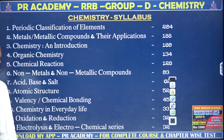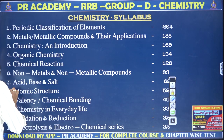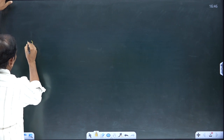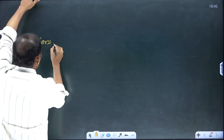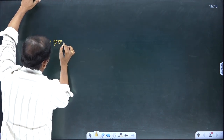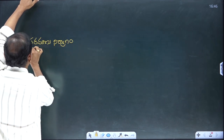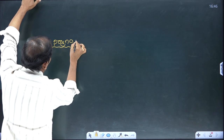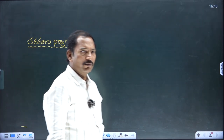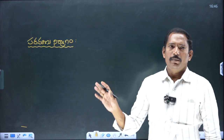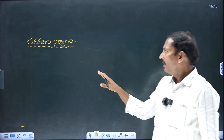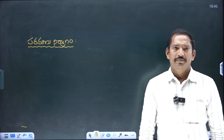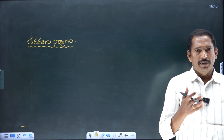The most important topic is atomic structure. This chapter is very important. In this chapter, the learning outcomes are covered. The first thing is Paramaanu (atomic structure), which is a very important topic.